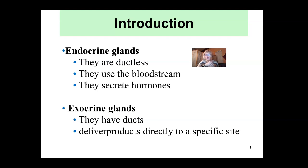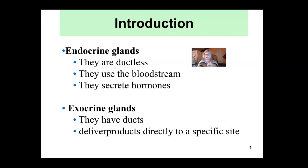These hormones affect either other glands or other organs, creating the effect they are supposed to create. For example, a hormone in the anterior pituitary gland gets into the bloodstream and then affects our gonads — the sex glands. If it's an ovary or the testes, it will affect that; the testes will release testosterone, the ovary will release estrogen, and it'll have a specific effect on the body.